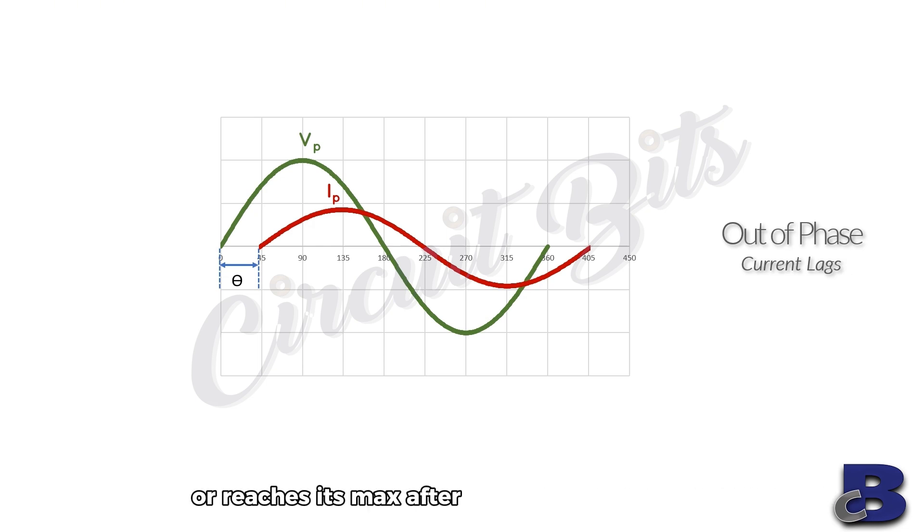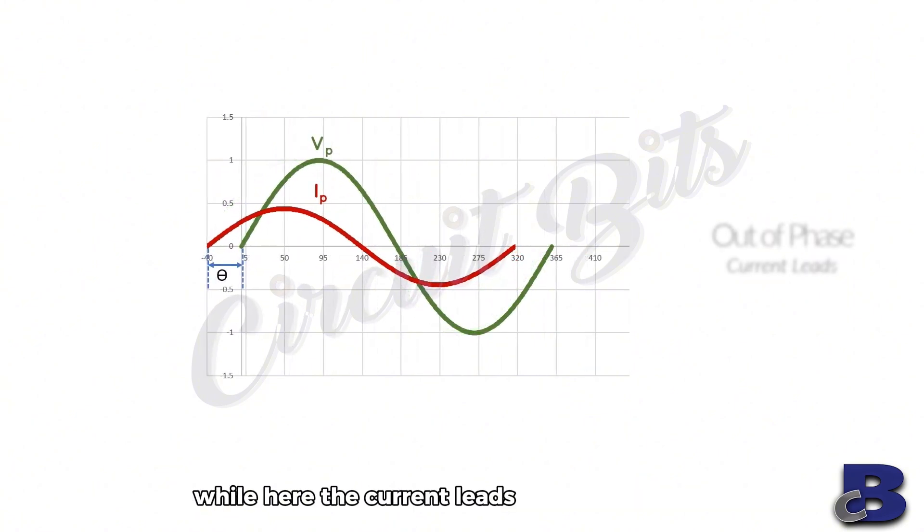or reaches its max after the voltage already has. While here the current leads by the angle theta, which is 40 degrees. We can still notice the current crosses the zero mark and reaches max before the voltage waveform.